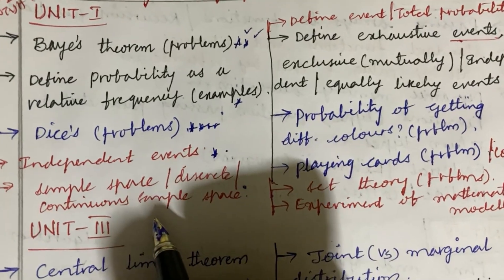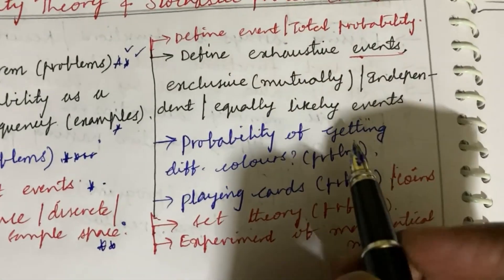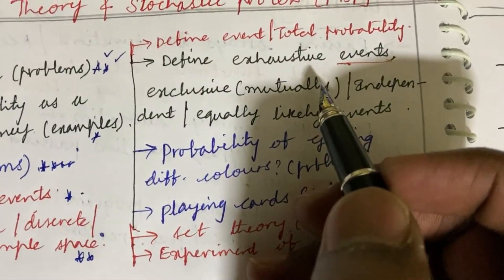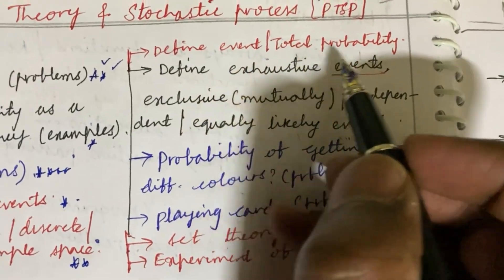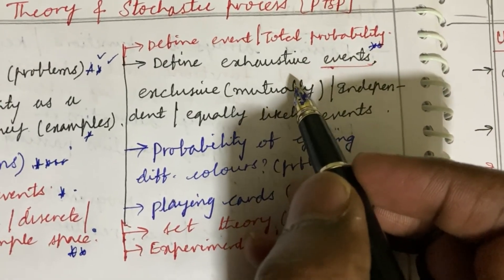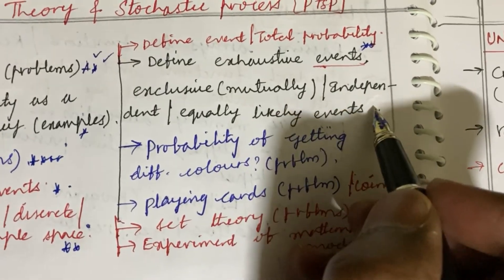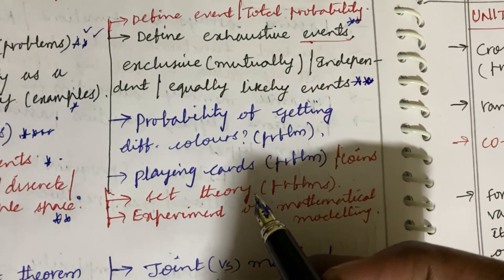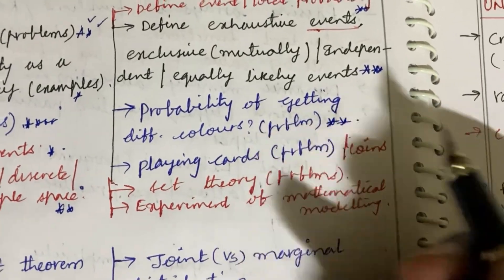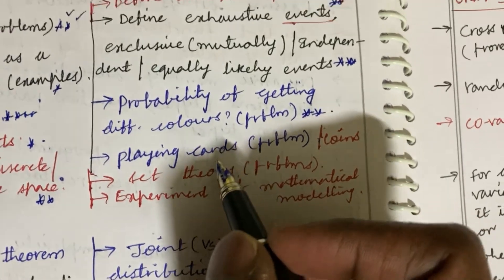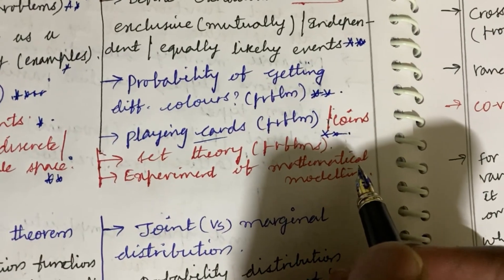There are no separate short questions — the question paper pattern is Part A as well as Part B. Define probability as a relative frequency along with an example. Define the terms: independent events, sample space, discrete sample space, and continuous sample space — such questions may come as short or long questions. Define the term event and define total probability. Define exhaustive events, mutually exclusive events, independent events, and equally likely events — these are top most questions which may occur in short as well as long form.